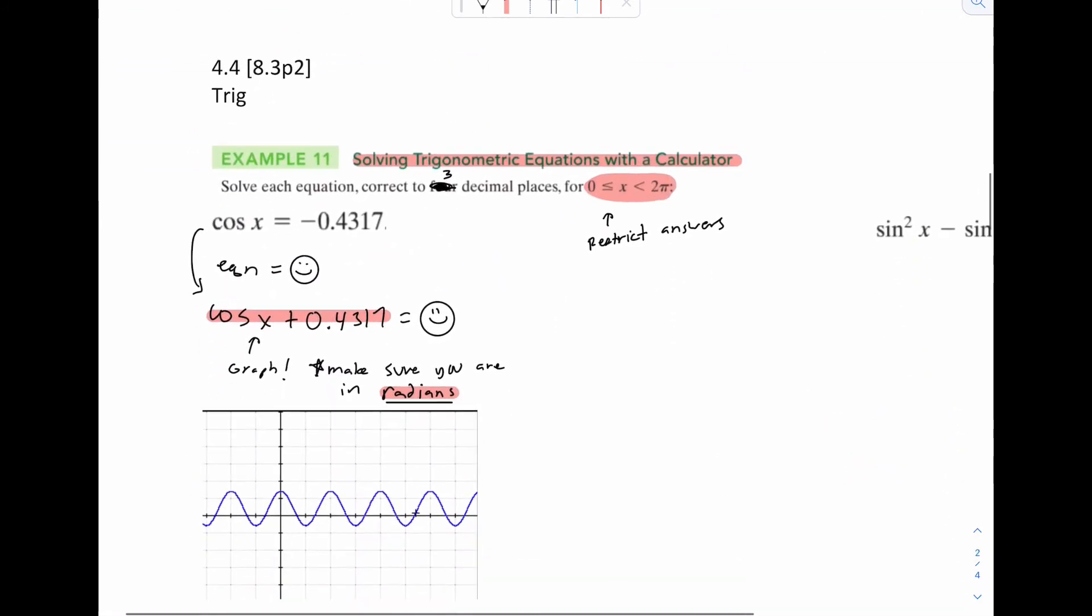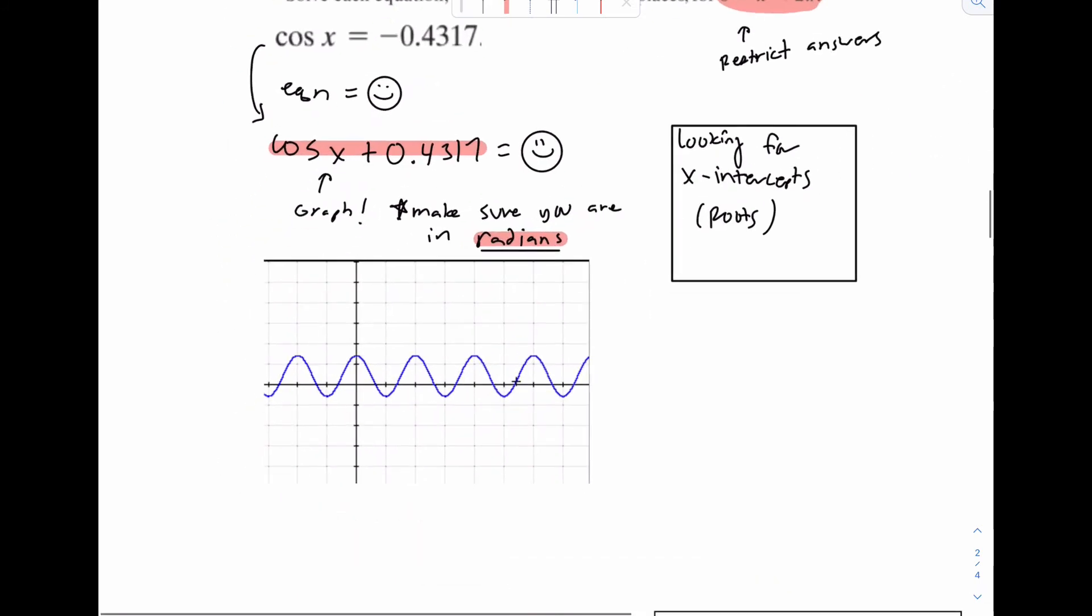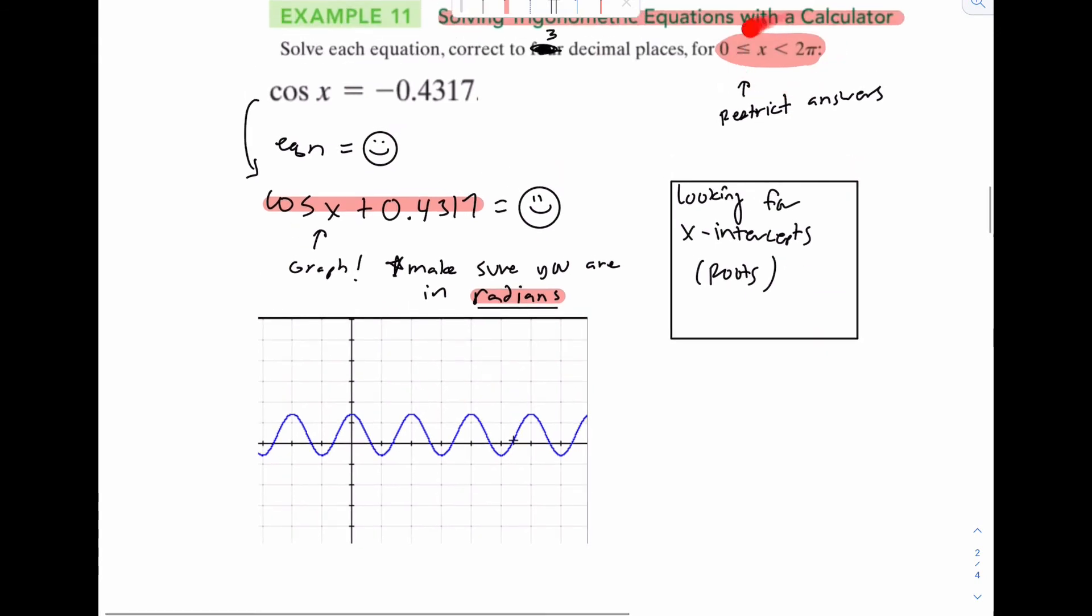The solutions are the x-intercepts. So we're looking for, I'll make a big box for you. Looking for the x-intercepts, or your calculator will call them the roots. But of course, if you look at your graph, they're a ton. One, two, three, four, five, six, seven, eight, and so on. There's a whole bunch of them. But we only want the ones zero to two pi. So what we're going to do is look for the first couple and make sure they fit within the range.